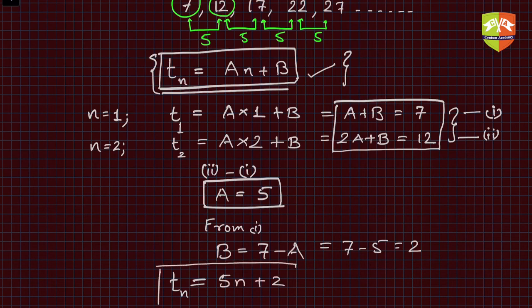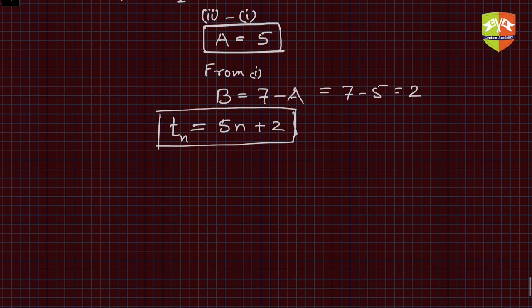Now, what was the question? The question was to find the 100th term. So this will be simply t100, which means n = 100. Put n = 100: 5 times 100 plus 2. Hence it is 502, which is the 100th number in this sequence.